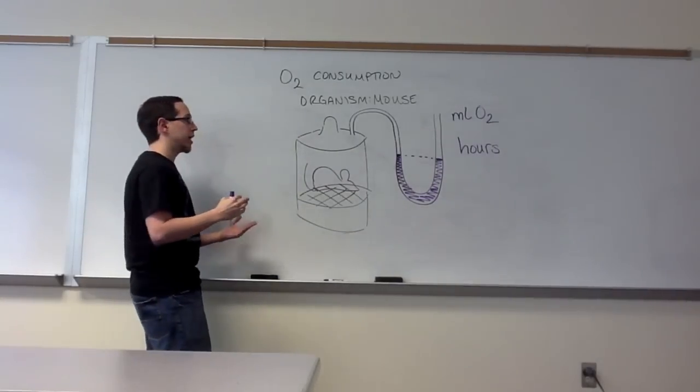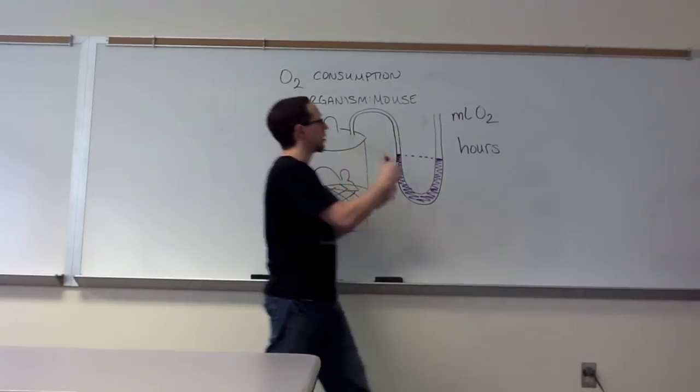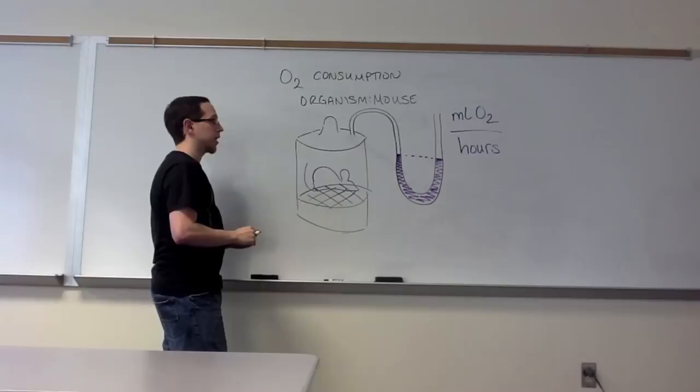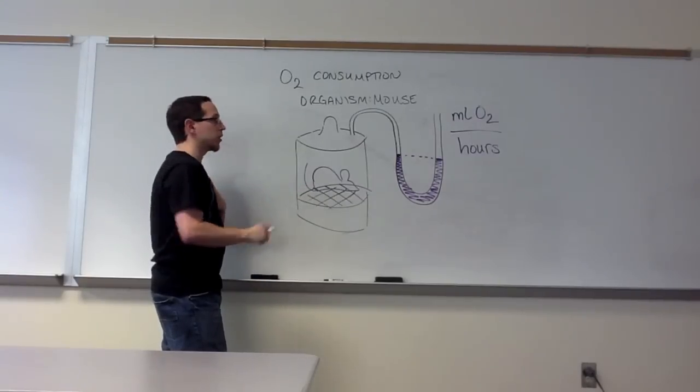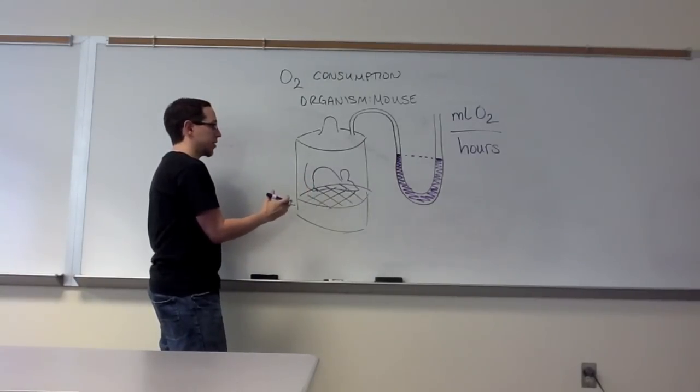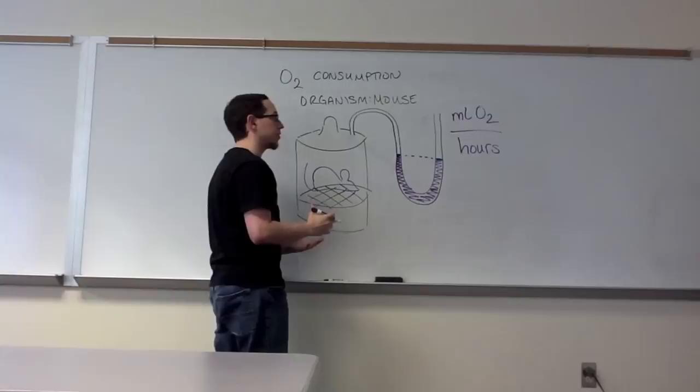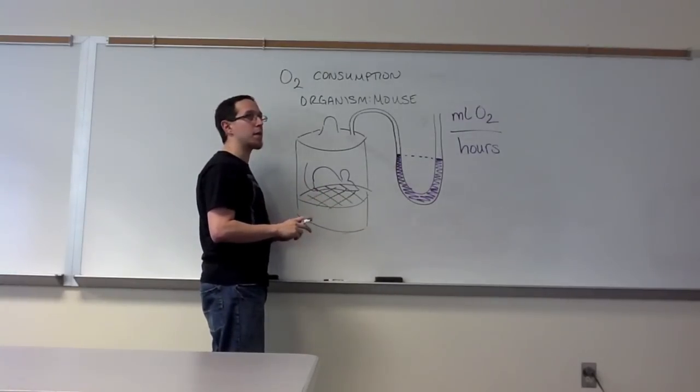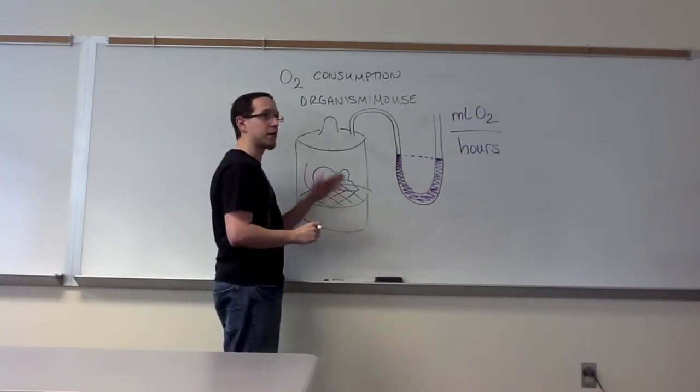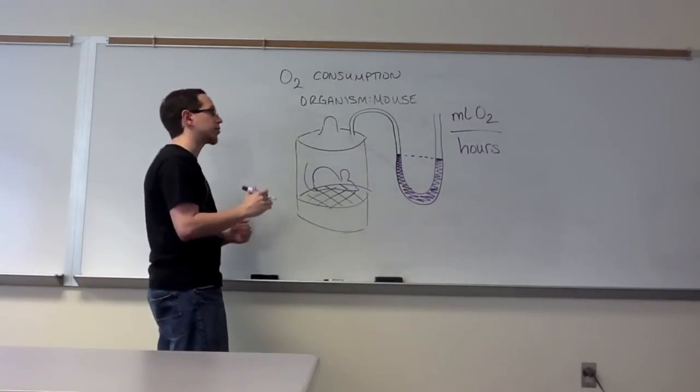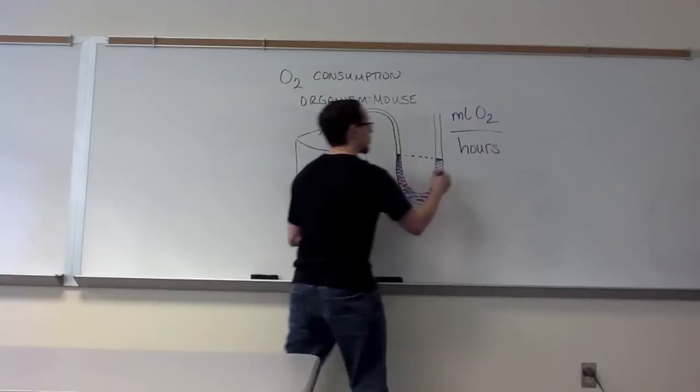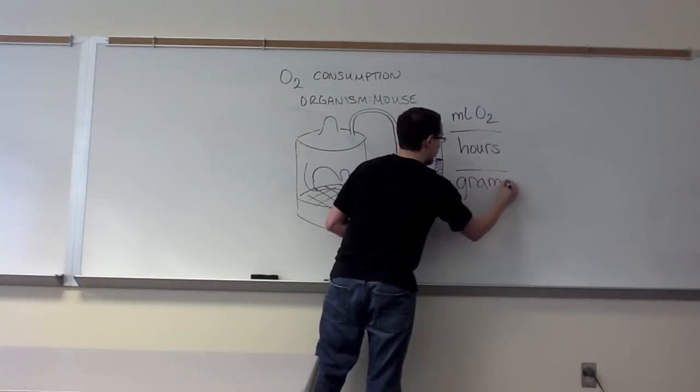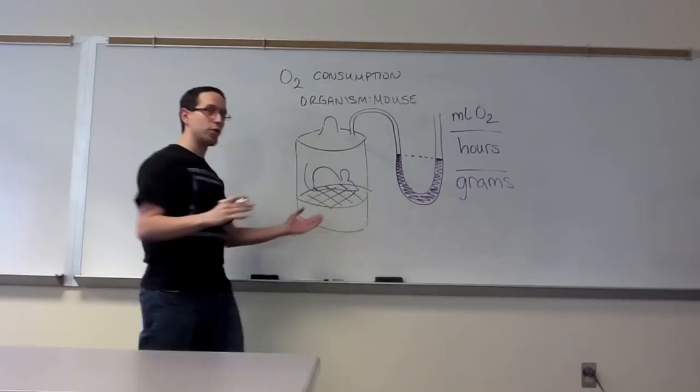In other words, think about it. If I were just to say milliliters of oxygen per hour, I can breathe more milliliters of oxygen per hour than a mouse can because I'm larger than that mouse. But does that mean that my metabolic rate is faster than a mouse's? We can't compare those two things right now. So the final unit that we're going to need is the mass of the animal. And that's how we're going to be able to compare one organism to another.